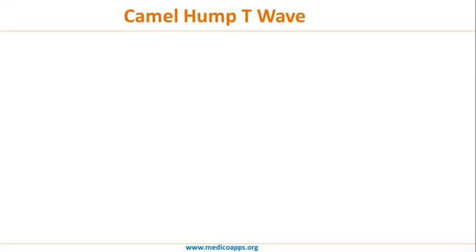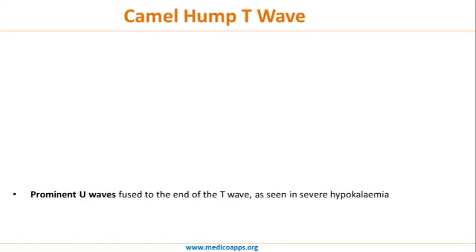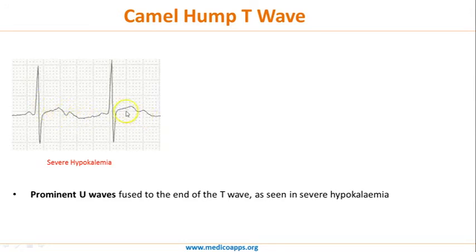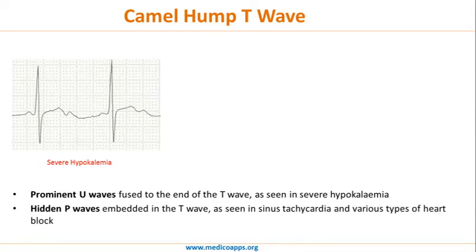Let's move to the camel hump T wave. The camel hump T wave can be due to a prominent U wave fused to the end of the T wave, as seen in severe hypokalemia. The T wave and U wave appear together as one, giving a camel hump appearance. This is the T wave, and this is the U wave — the prominent U wave is fused to the end of the T wave as seen in severe hypokalemia.